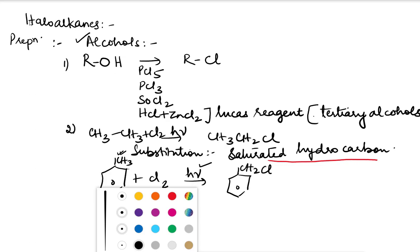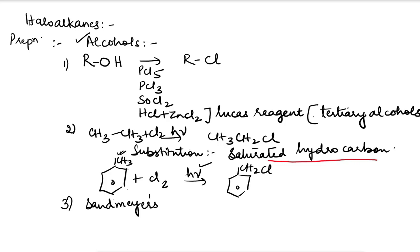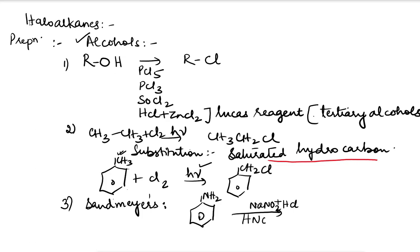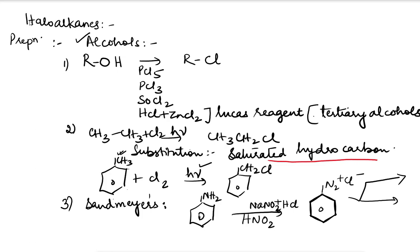Next, the Sandmeyer reaction — a very important reaction we also studied in amines. We start from aniline. Aniline reacts with NaNO2 plus HCl. Note that HNO2 (nitrous acid) is the same as NaNO2 plus HCl. This reaction gives a diazonium chloride, which can be used to convert to various different types of aromatic compounds.